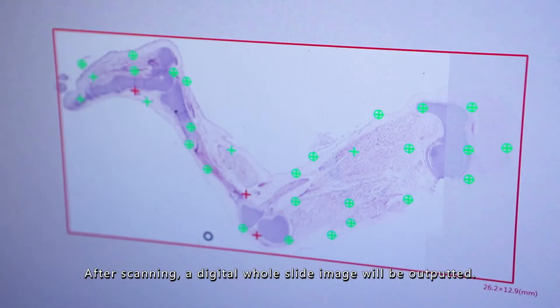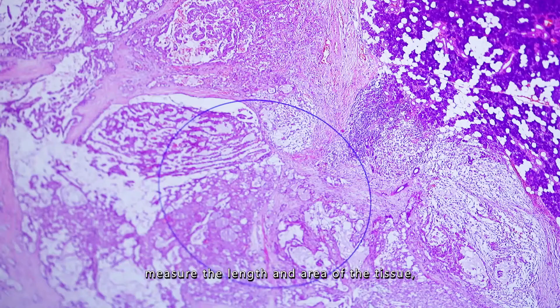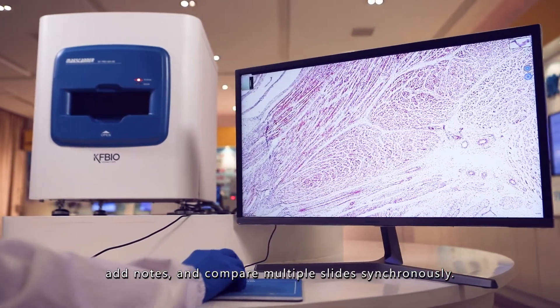After scanning, a digital whole slide image will be outputted. The pathologists are able to browse quickly, measure the length and area of the tissue and nodes, and compare multiple slides synchronously.